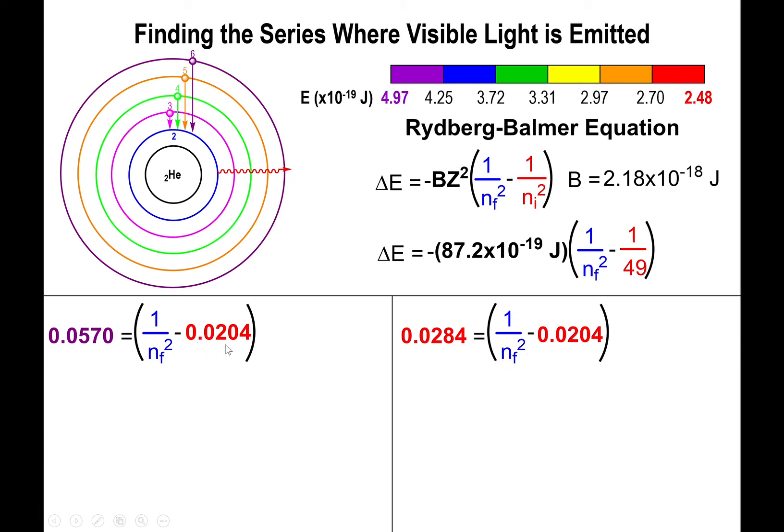So now what we get to do is add 0.0204 to both sides in order to isolate 1/n_final². We add 0.0204 to 0.0570, and we add 0.0204 to 0.0284. Now what we do is cross multiply—we multiply by n_final² and divide by 0.0774 on the left side, and on the right side we multiply by n_final² and divide by 0.0488. That will bring n_final to the top portion of the fraction. At this point, we take the square root of both sides to isolate for the value of n_final.